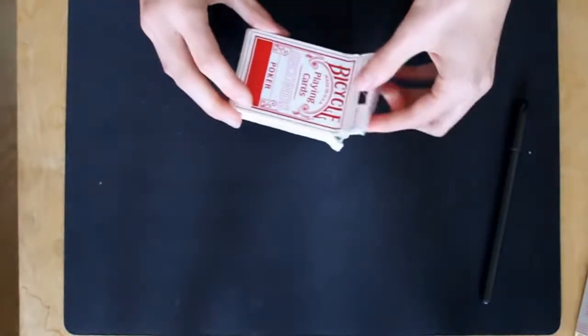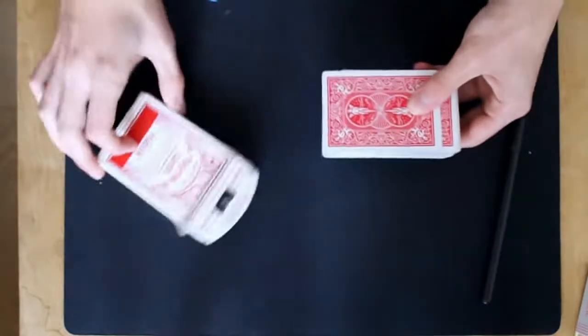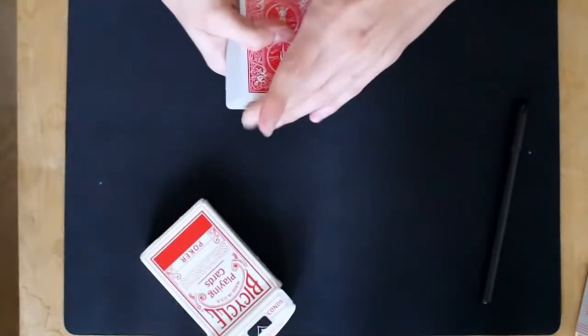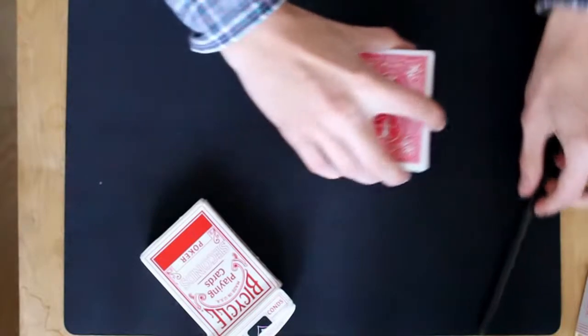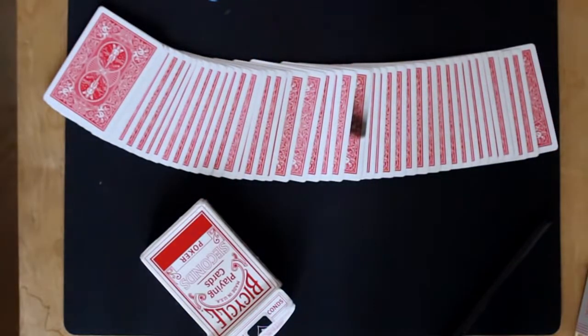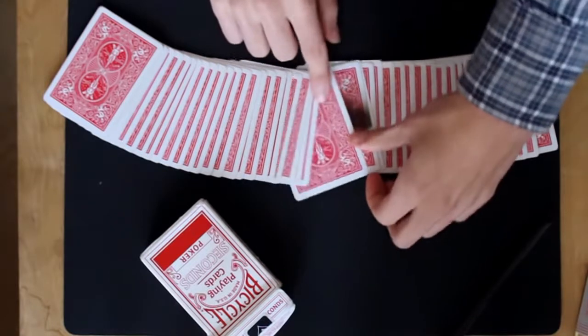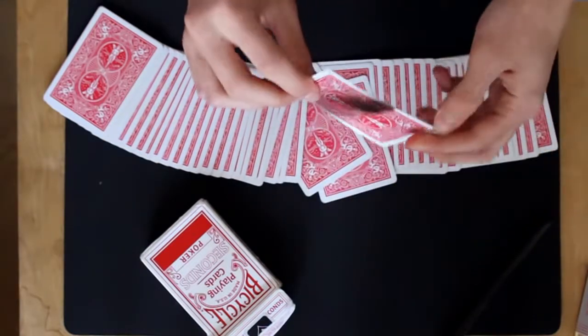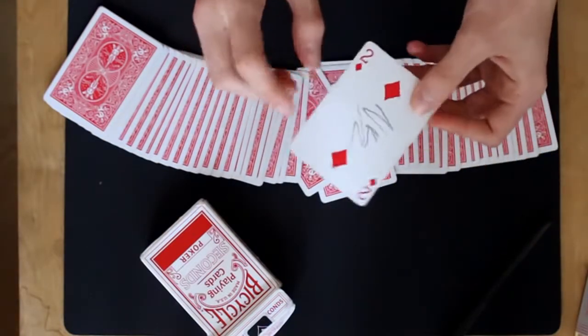If you look at the deck, it seems to be totally normal, right? But if we spread the cards we can see that one card is burnt and it is the signed two of diamonds.